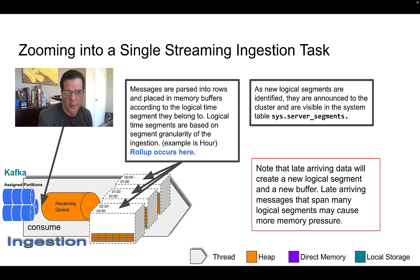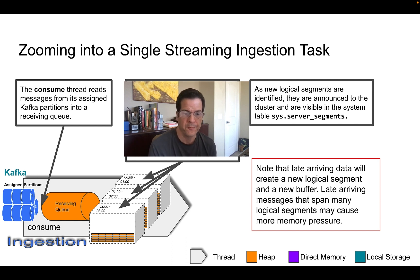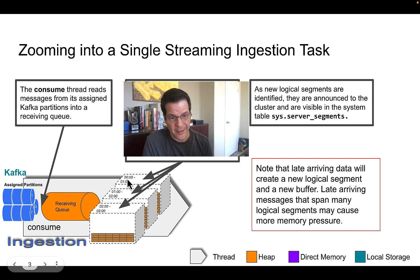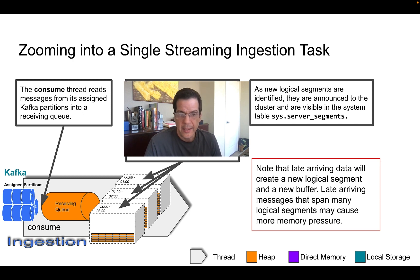We'll also see uses of direct memory and local storage as we move forward. From the receiving queue, the messages are parsed — they can come in multiple different formats — and parsed into internal record form. They are then applied to a logical segment buffer. These logical segment buffers represent time intervals; for example, with segment granularity of one hour, you'd see buffers for hour zero-to-one, one-to-two, two-to-three. These are in-memory heap structures managed by the consumption thread. As it appends rows, it also applies rollup during ingestion into these buffers.